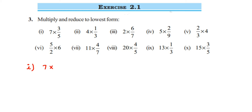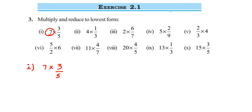So we have 7 into 3/5. You can see that we cannot cancel numbers here. Remember, when cancelling, you have to cancel a number present in the numerator with one in the denominator. Here, 7 is in the numerator and 5 is in the denominator — it's not possible to cancel them. So since we cannot cancel any number, we're going to multiply. The 7 is a numerator and it gets multiplied with the numerator 3.